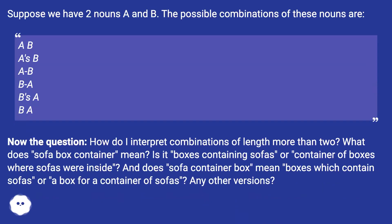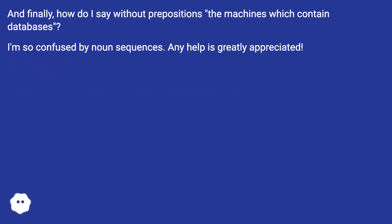Suppose we have two nouns A and B. The possible combinations of these nouns are: AB, A's B, AB, BA, B's A, BA. Now the question: how do I interpret combinations of length more than two? What does sofa box container mean? Is it boxes containing sofas, or a container of boxes where sofas were inside? And does sofa container box mean boxes which contain sofas, or a box for a container of sofas? Any other versions? And finally, how do I say without prepositions the machines which contain databases? I'm so confused by noun sequences. Any help is greatly appreciated.